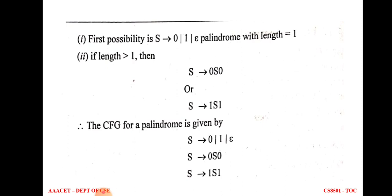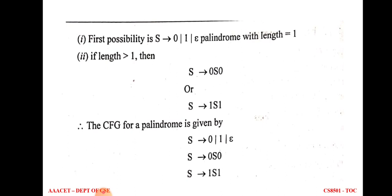From this grammar: the terminals are {0, 1, epsilon}, the only variable is capital S, and the start symbol is S (the left-hand side of the first production). There are five production rules: S→0, S→1, S→epsilon, S→0S0, and S→1S1. This completes the first CFG construction problem.